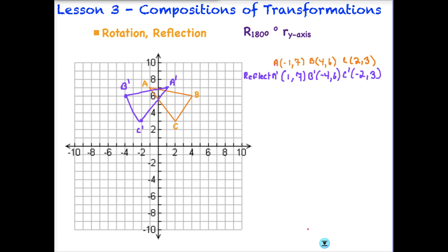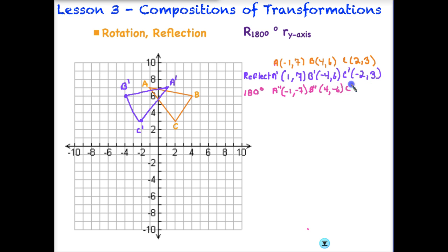There's our first image. Now for our second transformation — a rotation of 180 degrees. When we rotate 180 degrees, x and y stay in the same positions but just switch signs. So A'' becomes (-1, -7), B'' becomes (4, -6), and C'' becomes (2, -3). All we did is multiply each x and y coordinate by -1, which causes the signs to flip. Plotting: A double prime at (-1, -7), B double prime at (4, -6), and C double prime at (2, -3).